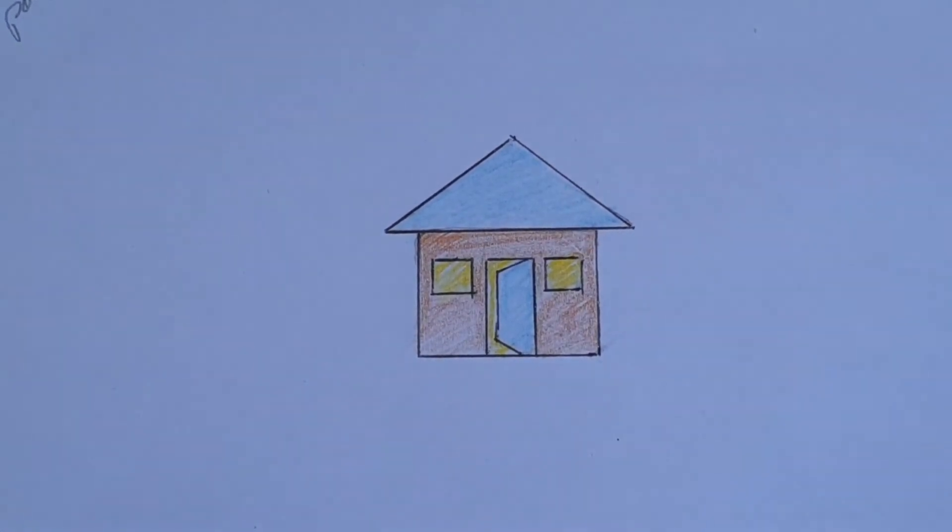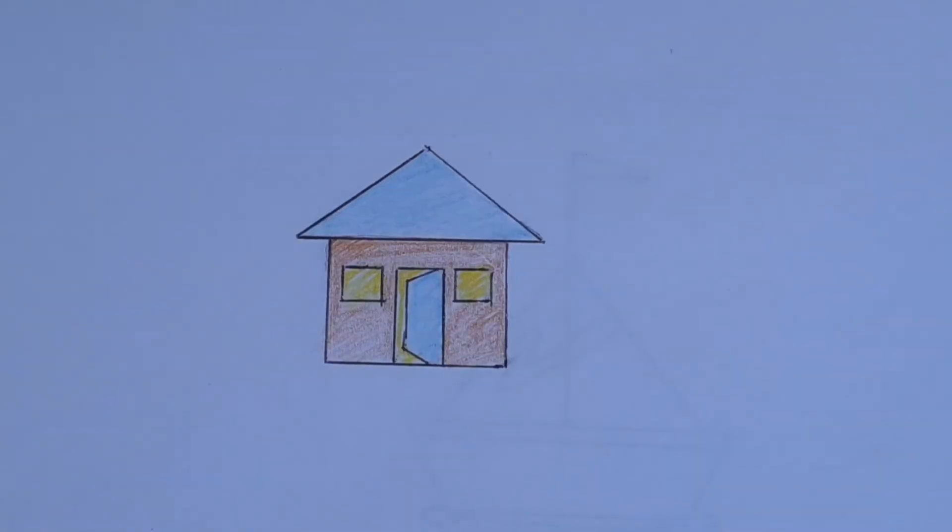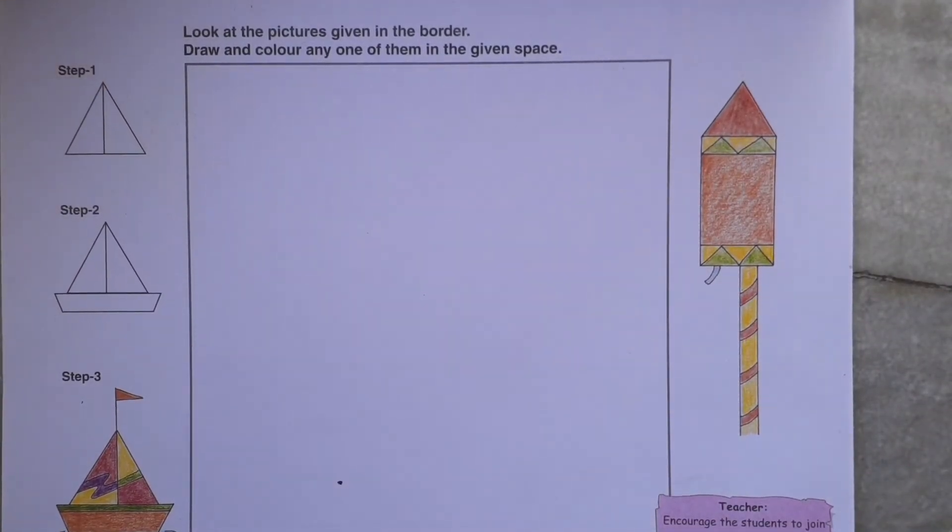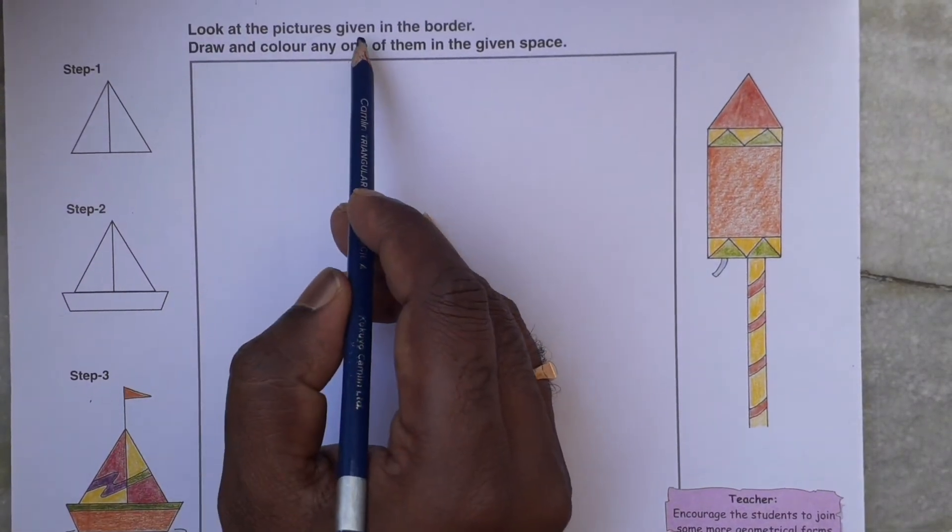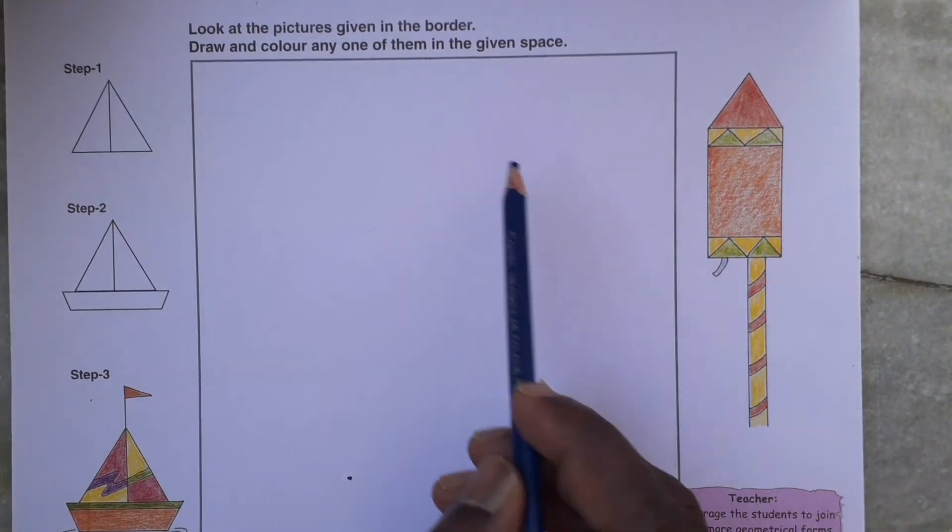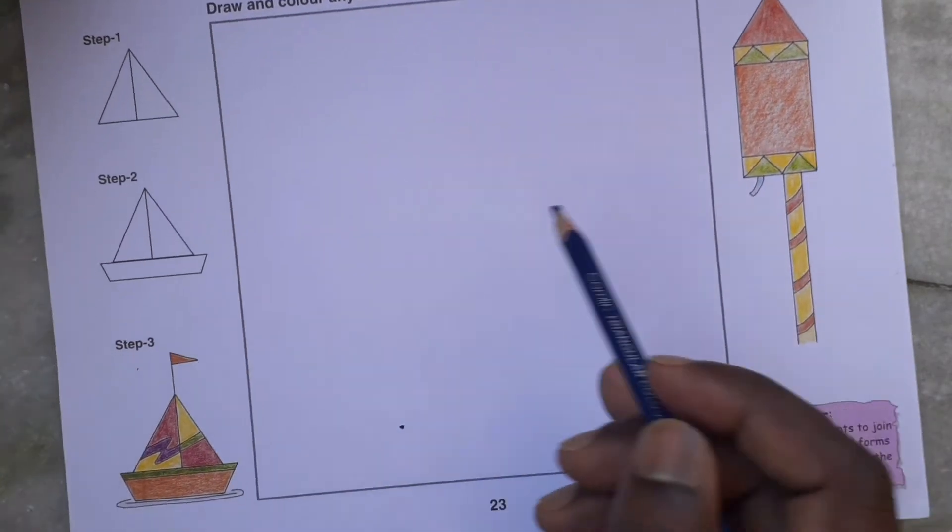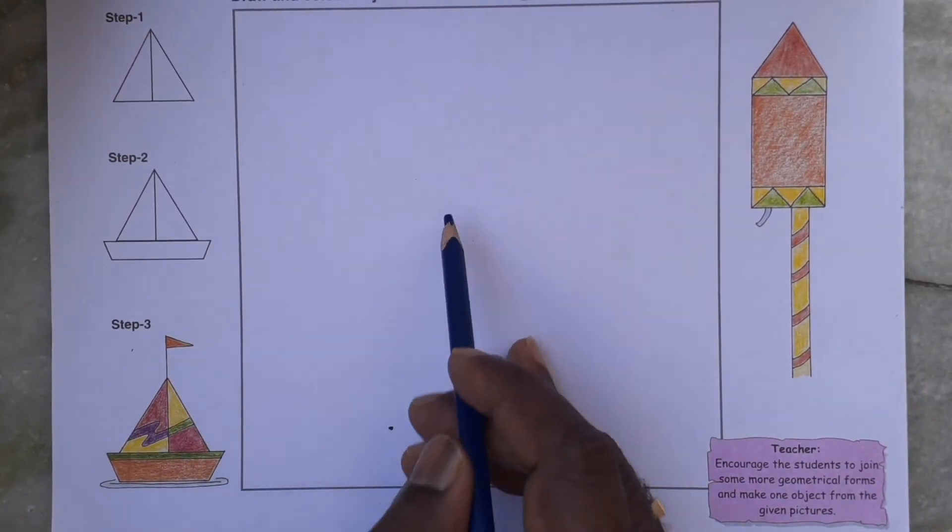Now page number 23. Look at the pictures given in the border, draw and color any one of them in the given space. You can choose any one. I am choosing this, I will draw this picture.